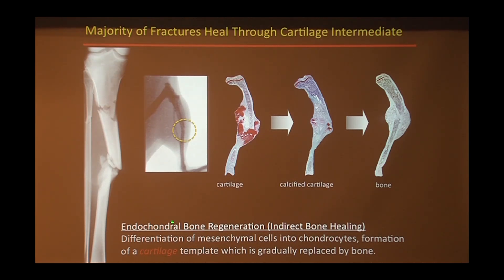This process is called endochondral bone regeneration, or indirect bone healing. Basically what that refers to is the fact that it goes through a cartilage intermediate — it's an indirect process to forming bone. This is the way that the majority of fractures heal, and it's also the way the majority of bones in the body develop.